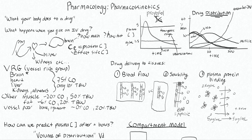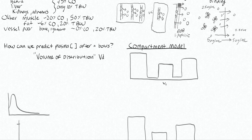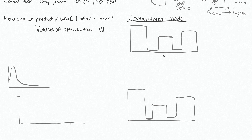We know drugs are distributed in different tissues after we give them. How can we predict the plasma concentration of a drug after giving a bolus, knowing that it will distribute to various tissues? The initial plasma concentration of a drug can be predicted by the apparent volume of distribution. Volume of distribution is denoted as Vd, and we first look at Vd initial to explain this concept.